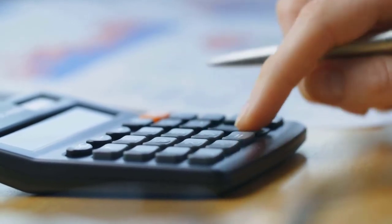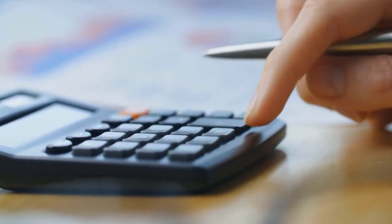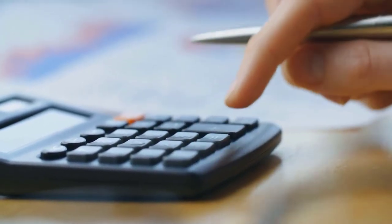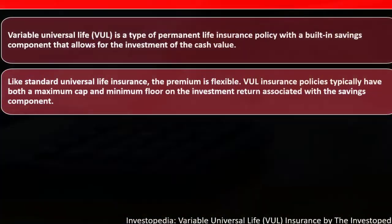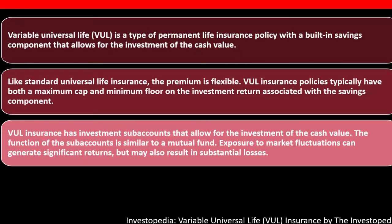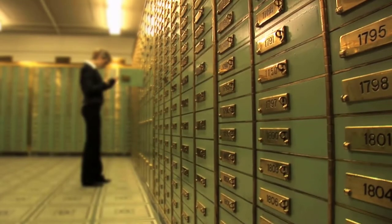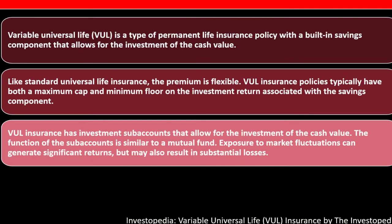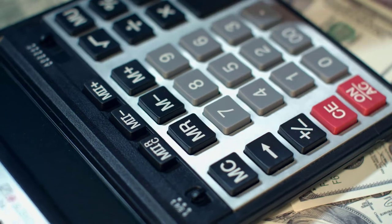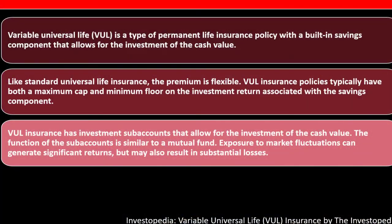If you put money into the variable universal life, you have this cash value component — a savings-like component — and then there's a question of what the returns might be on that savings component. The VUL insurance has investment sub-accounts that allow the investment of the cash value, functioning similarly to a mutual fund. This could tie into index funds, for example, to vary and potentially increase returns. Exposure to market fluctuations can generate significant returns but may also result in substantial losses.